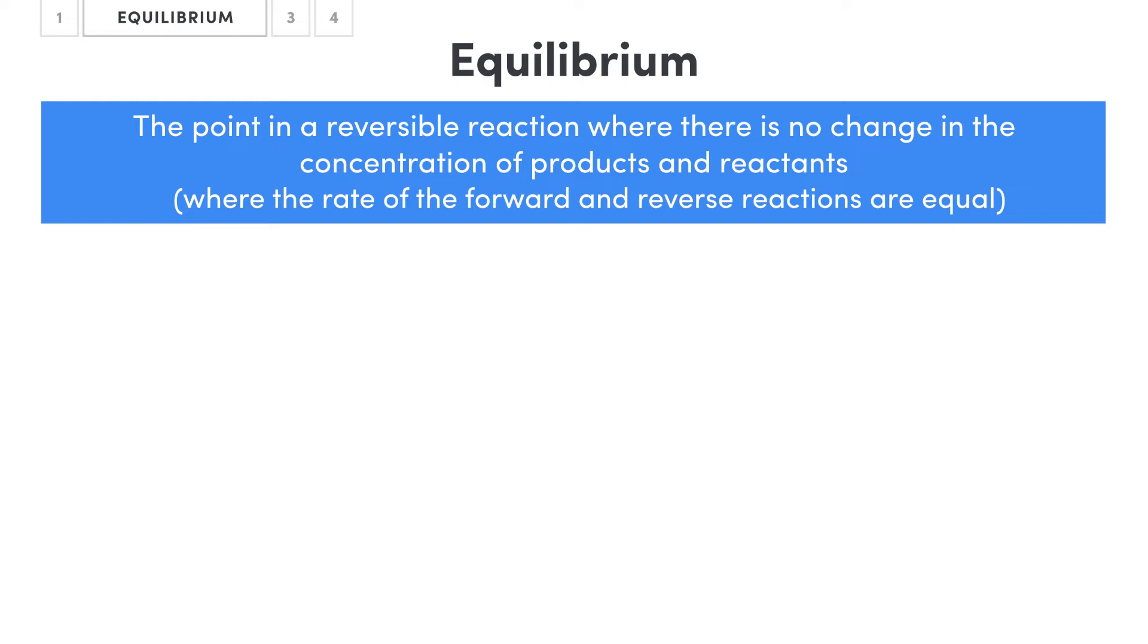And this is a concept that's probably best understood visually. So here I have the chemical equation for the reaction of nitrogen dioxide to dinitrogen tetroxide, which as we can see is a reversible reaction. And as a bit of background knowledge on these compounds, nitrogen dioxide is a red-brown color while dinitrogen tetroxide is colorless.